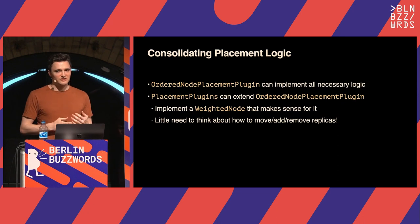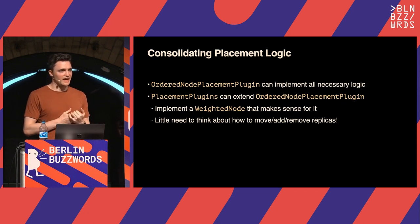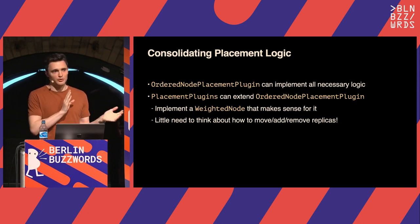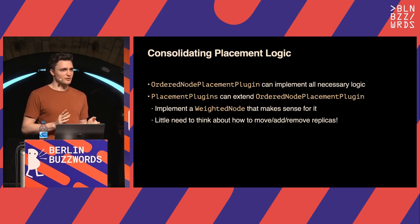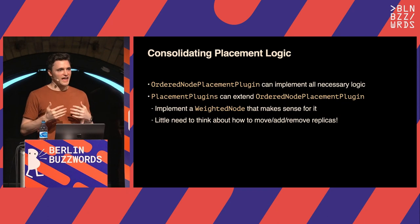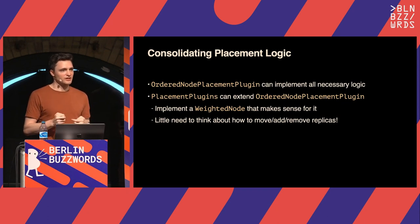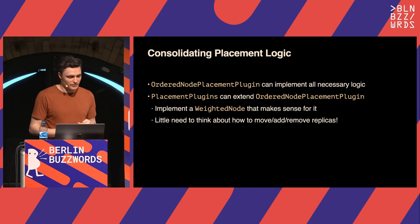With this one assumption, we have one class with all the logic that satisfies all placement plugins. All placement plugins just need to implement OrderedNodePlacementPlugin and provide a weighted node. Each placement plugin has a different idea of what a weight is: MinimizeCores uses the number of cores on the node, Affinity has a much more complex weight calculation, and Random uses a weight of zero — you randomly decide where to put replicas.